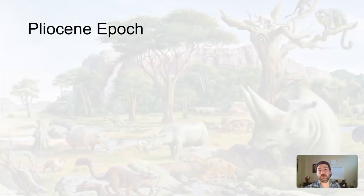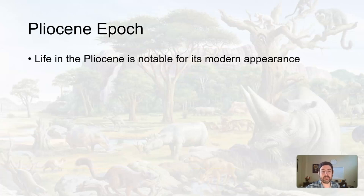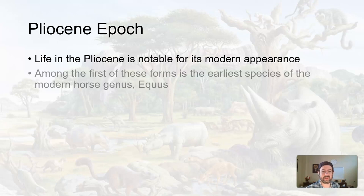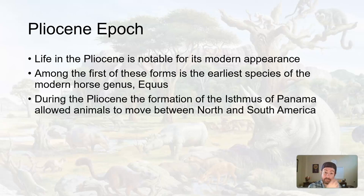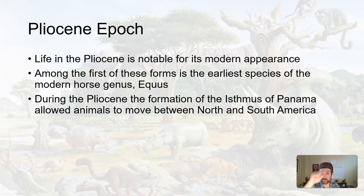Jumping into the Pliocene Epoch — very modern appearance as we're getting into the Quaternary. Things have been evolving and it's starting to look more like what we would recognize now. The earliest species of modern horse evolved during this time. During this epoch, the Isthmus of Panama, which connects North America to South America, allowed animals to move between North and South America for the first time.